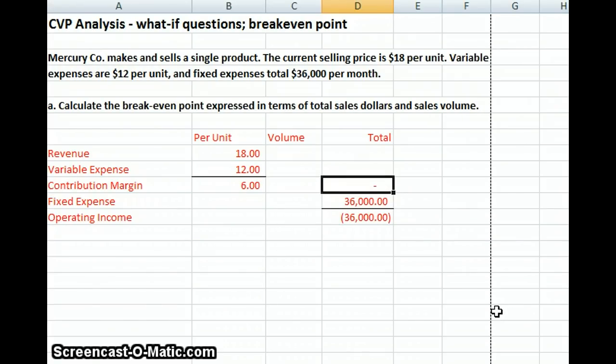Our fixed expenses are $36,000. So we need to figure out how many units do we sell that will break us even. To calculate that, all we need to do is take our fixed cost, divided by our contribution margin per unit. That tells us we need 6,000 units to break even with a contribution margin of $6. We can check that by taking our $6 per unit times our volume, and we have $36,000. Our operating income is zero.